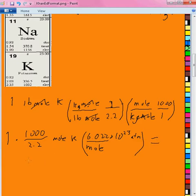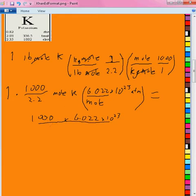So you would do your multiplication, and you would get 1,000 times 6.022 times 10 to the 23rd, which is Avogadro's number, divided over 2.2 atoms, because we canceled out mole units, and that K is for potassium, atoms of potassium.